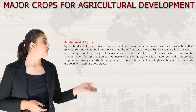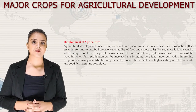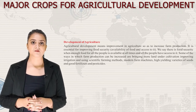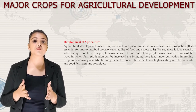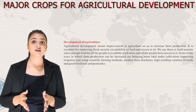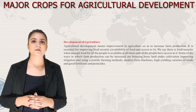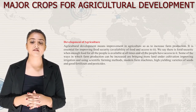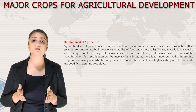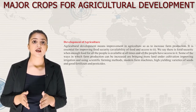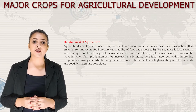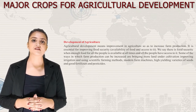Now let's talk about development of agriculture. Agricultural development means improvement in agriculture so as to increase farm production. It is essential for improving food security — availability of food and access to it. We say there is food security when enough food for all people is available at all times. Ways to increase farm production include bringing more land under cultivation, improving irrigation, using scientific farming methods, modern farm machines, high-yielding varieties of seed, and good fertilizers and pesticides.